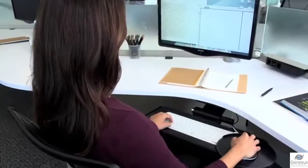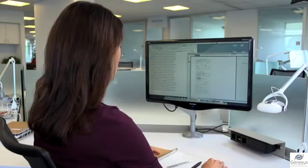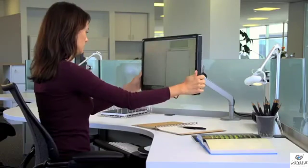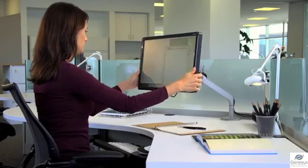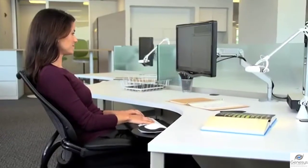For optimum viewing, a monitor should be positioned an arm's length away with the top line of text at or below eye level. Tilt the top of the monitor away from you slightly until your line of sight is perpendicular to the monitor. A properly positioned monitor increases the safety and comfort of viewing.